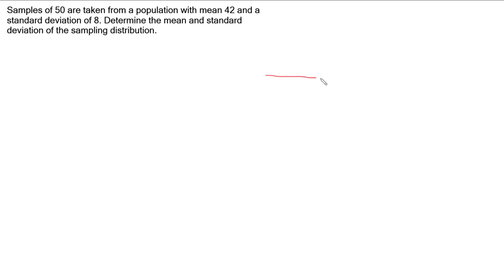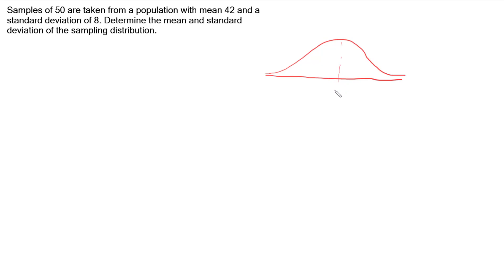Now if your sample size is big enough and you take enough samples, your sampling distribution begins to approximate a normal distribution. And that normal distribution will have a mean and a standard deviation of its own, and that's what we want to find out.